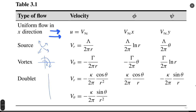Doublet flow is where flow circulates, very similar to the distribution of magnetic field lines. This similarity may exist because magnetic fields can also be described by Laplace's equation.